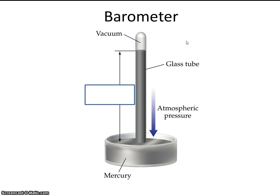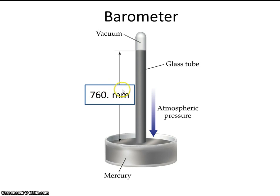Now on an average day, we've learned that the pressure is about one atmosphere, or you could say 760 millimeters of mercury. So 760 millimeters of mercury — that's the standard pressure. So if this was an average day, to what height do you think this mercury would rise up to? That's right — 760 millimeters is how tall this mercury column would be.